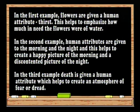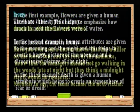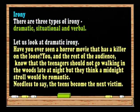In the first example, flowers are given a human attribute: thirst. This helps to emphasize how much in need the flowers were of water. In the second example, human attributes are given to the morning and the night, which helps to create a happy picture of the morning and a discontented picture of the night. In the third example, death is given a human attribute which helps to create an atmosphere of fear or dread.